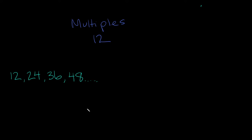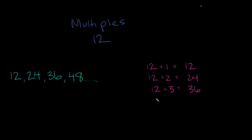The other way is by taking our original number, twelve, and multiplying it by whole numbers. Twelve times one equals twelve. Twelve times two equals twenty-four. Twelve times three equals thirty-six. Twelve times four equals forty-eight. As you can see, the numbers are the exact same: 12, 24, 36, 48 — both methods give the same result.